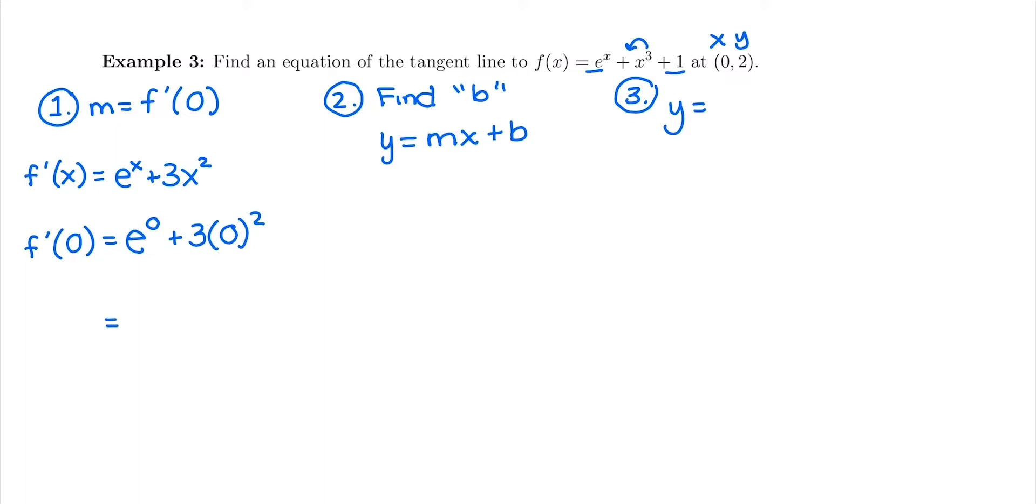And you could use your calculator. Or you might already know anything to the 0 power is 1. So e to the 0 is 1 plus 3 times 0 squared is just going to be 0. So my slope is going to be 1. Feel free to use your calculator if you're not sure though.